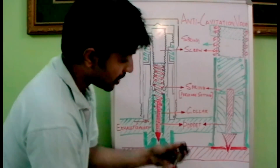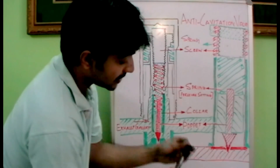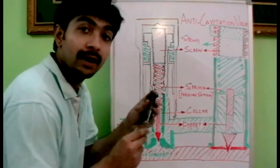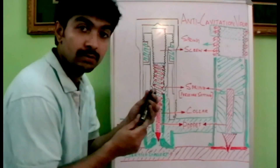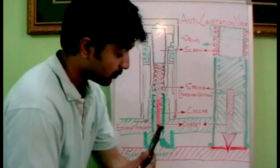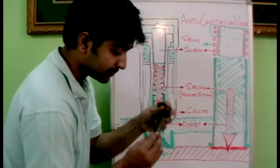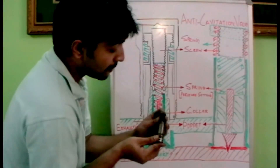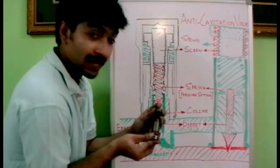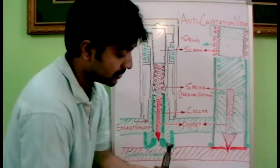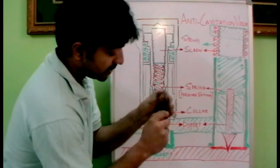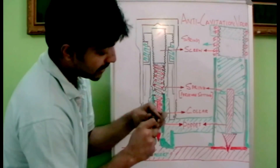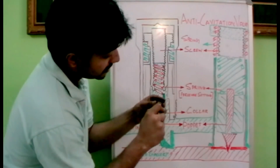So this is the part which works as a relief valve, which has already been explained in my other YouTube channel video. We have a portion outside coming like this, which will actually be working as the anti-cavitation valve. We have a nut over here with a spring inserted there.